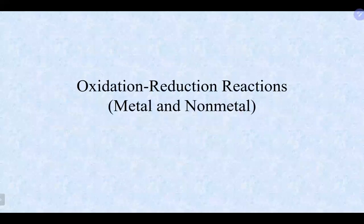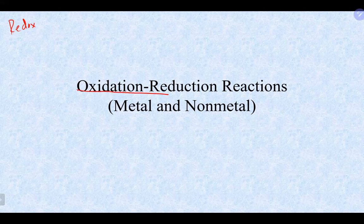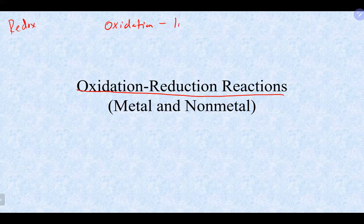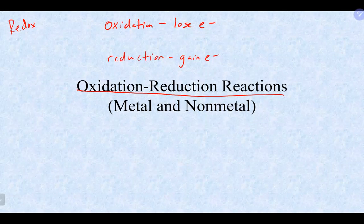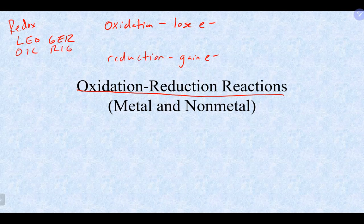Now the other big classification: redox reactions, which stands for oxidation and reduction reactions. Oxidation means losing electrons; reduction means gaining electrons. Some people use the mnemonic 'LEO the lion goes GRR' — loss of electrons is oxidation, gain of electrons is reduction — or 'OIL RIG': oxidizing is losing, reducing is gaining.